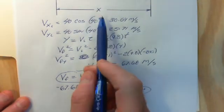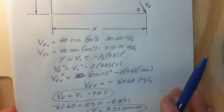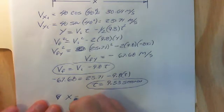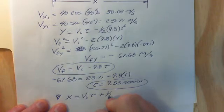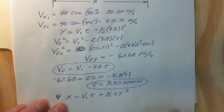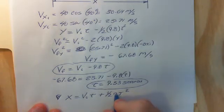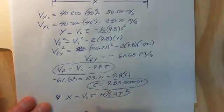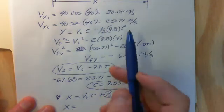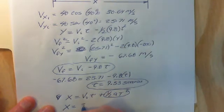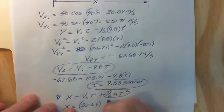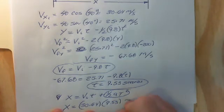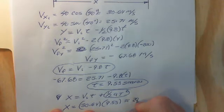Now let's find out what the horizontal displacement is going to be. We go back to our equation: displacement equals vi times t plus one-half times a times t squared. We know our acceleration is zero because we're ignoring air resistance, so we can ignore that part of the equation. The horizontal displacement is simply the horizontal velocity of 30.64 multiplied by our time of 9.53, which gives us a displacement of approximately 292 meters.